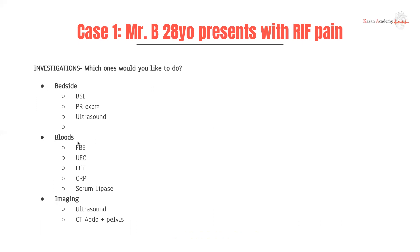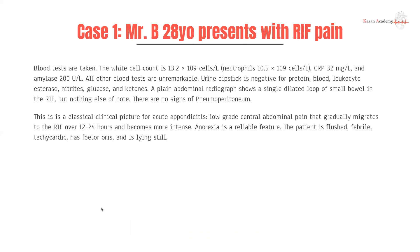Investigations: white cell count is 13.2 × 10⁹/L with neutrophils at 10.5 — greater than 75%, indicating a left shift. CRP is 32, which is elevated but not extremely high. Amylase is 200, not three times the upper limit of normal, so pancreatitis is less likely. All other bloods are unremarkable. Urine dipstick is negative for protein. Plain abdominal radiography shows a single dilated loop of bowel in the right iliac fossa but no signs of pneumoperitoneum, so we're not worried about perforation.